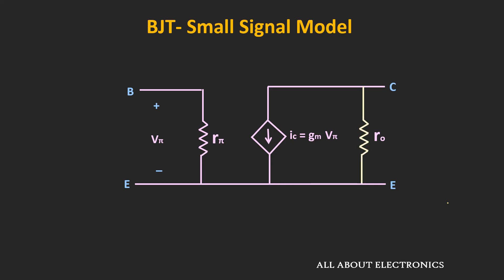This is the small signal model of the BJT including the Early effect. This output resistance plays a crucial role in deciding the gain of the BJT amplifier. In the upcoming videos, we will see how to do the AC analysis of the BJT circuit using this small signal model, and how to find different amplifier parameters like voltage gain, input impedance, and output impedance.